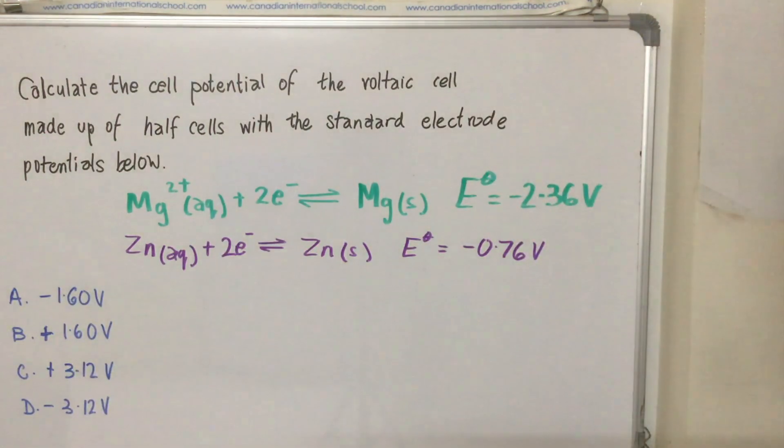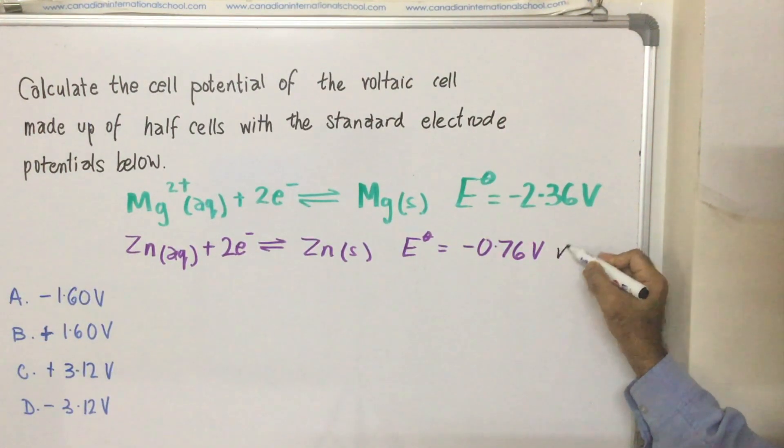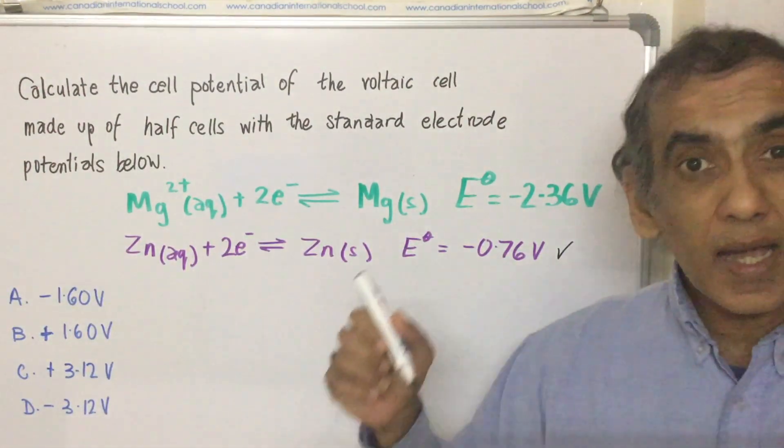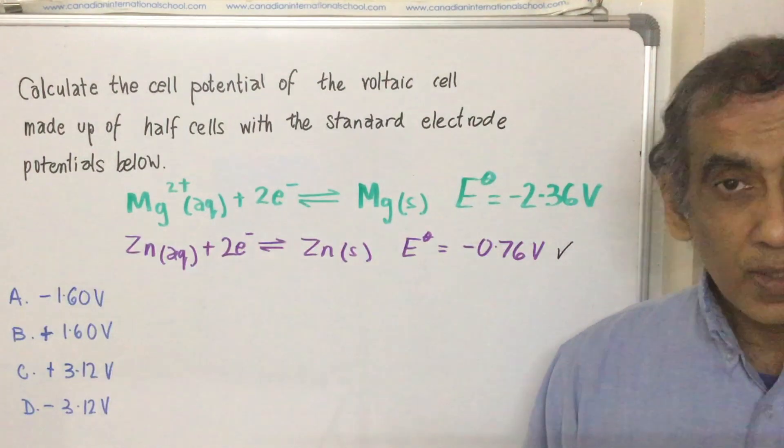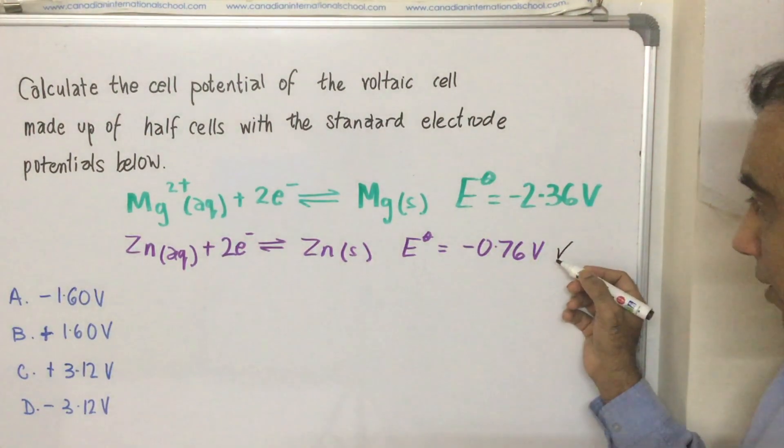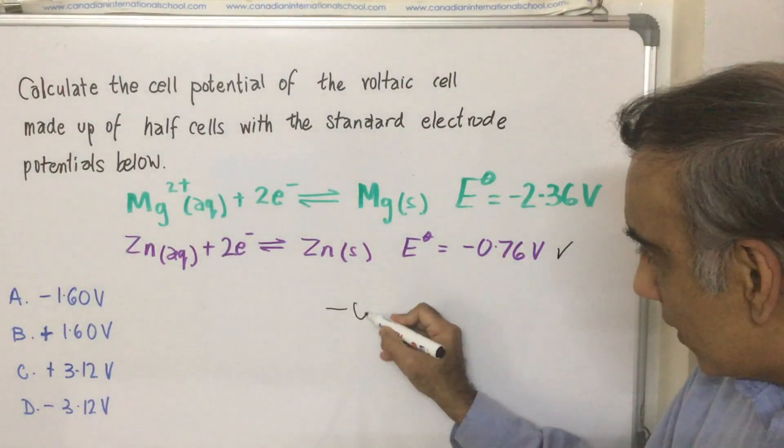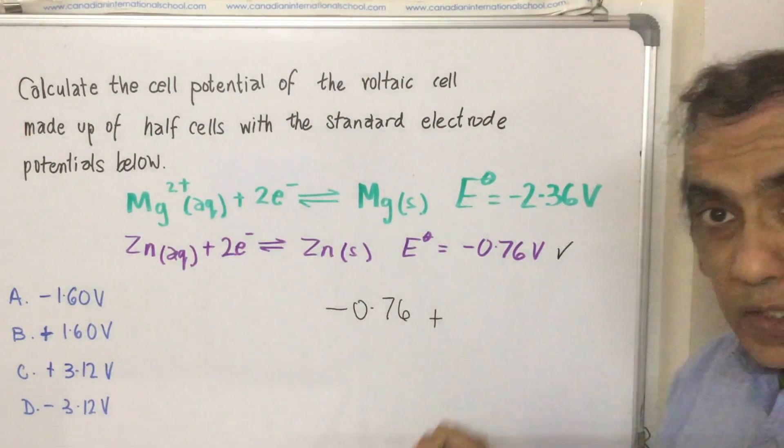So in this case, the entity that's going to be reduced will be zinc because negative 0.76 is higher than negative 2.36. So this is the entity that's going to be reduced. So negative 0.76, that's the reduction potential.